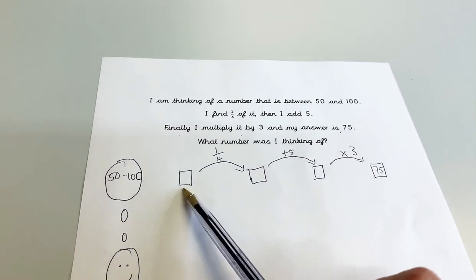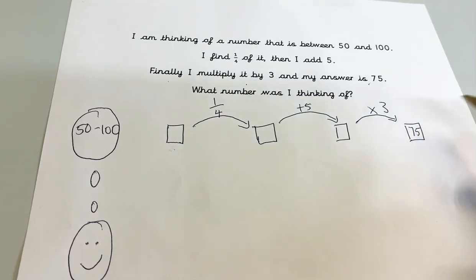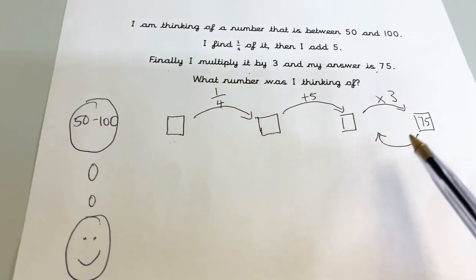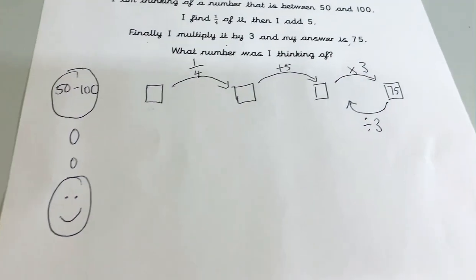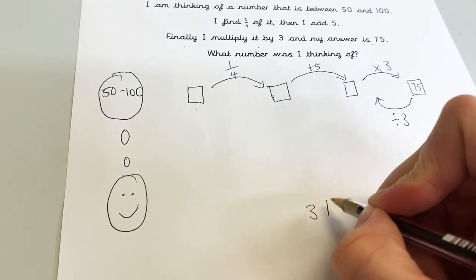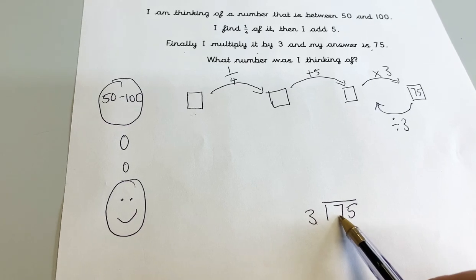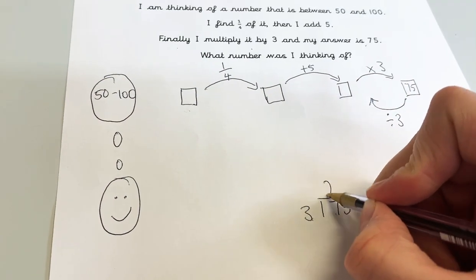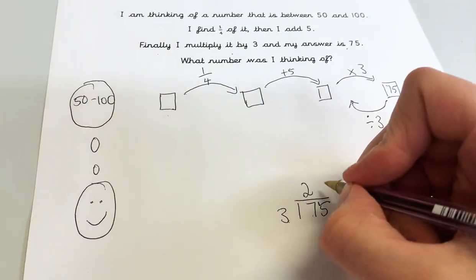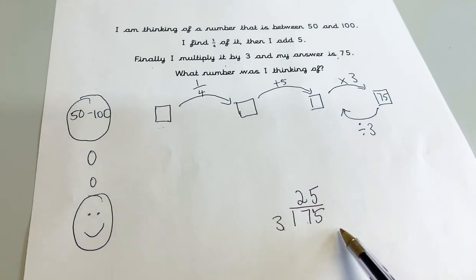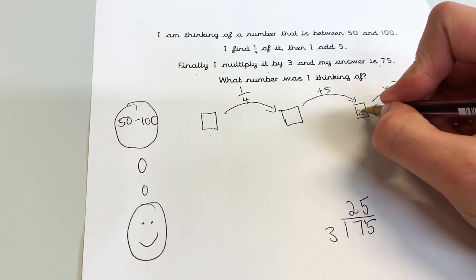What number was I thinking of? I need to go back to the beginning — I'm going to work backwards. We multiply by 3, so what am I going to do? The opposite of multiplication is division. So 75 divided by 3. Use the short division method if you're not sure. How many 3s in 7? Two 3s in 7, remainder 1, which I carry over. How many 3s in 15? Five 3s in 15. So 75 divided by 3 is 25.